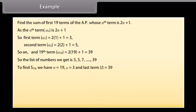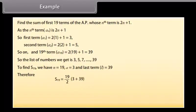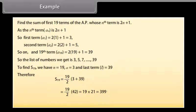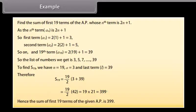To find S19, we have N as 19, A as 3, and L as 39. Therefore, S19 equals 19 over 2 times (3 plus 39), which equals 19 over 2 times 42, which equals 19 times 21, which equals 399. Hence, the sum of the first 19 terms of the given AP is 399.